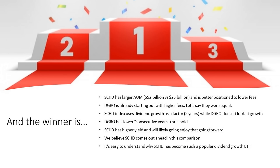When it comes to declaring the winner, SCHD has the larger AUM — Assets Under Management — at $52 billion versus DGRO at $25 billion, so Schwab is better positioned to lower fees going forward, while DGRO is already starting out with higher fees. Even if we pretend they're equal, the SCHD index uses dividend growth as a factor while DGRO doesn't look at growth. SCHD also has a lower consecutive-years threshold — DGRO requires 5 years versus Schwab's 10 — and Schwab has a higher yield likely to persist. We believe SCHD comes out ahead, which explains why it's become such a popular dividend growth ETF.